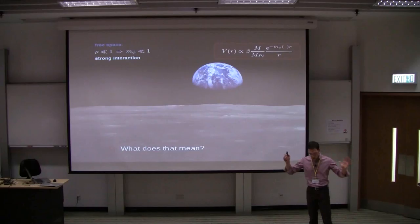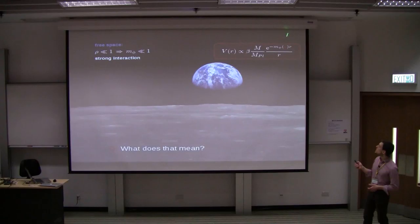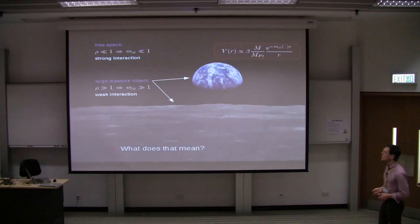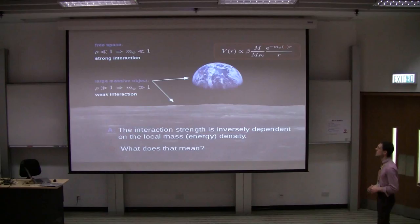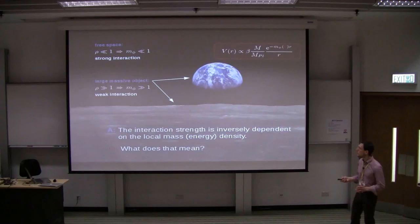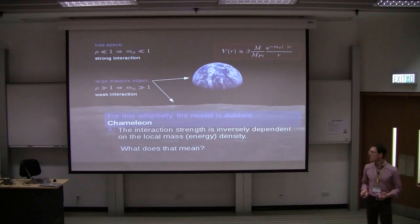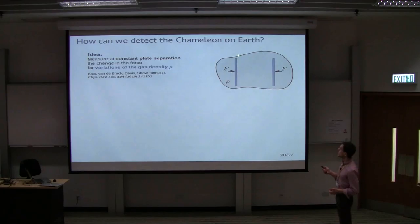The interpretation is rather simple. If you are in space, in free space, and you have very low energy density, then you have a strong interaction. Why? Because the exponential term basically goes to one. Mass is very small. If you are in or near large massive object, and that means just being inside the galaxy is already enough, then you have the mass being much larger than one, and you would have suppression. So the interaction is inversely dependent on the energy density. And for this property of the model, it is called chameleon because it adapts to the local environment.